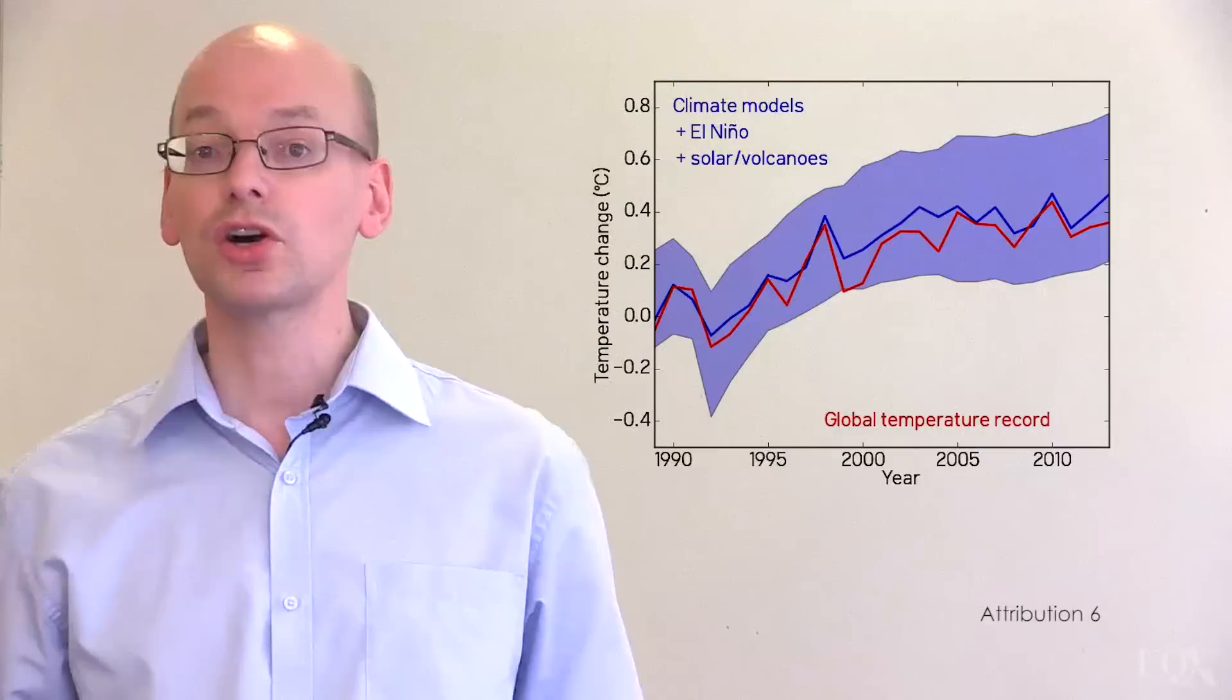What can we conclude from this? When we put everything we know into the models, the answers match what we observe. So the slowdown in warming makes sense in retrospect, and doesn't give us a reason to doubt the models. However, we couldn't have predicted it in advance, because we can't predict volcanoes, pollution or the sun.